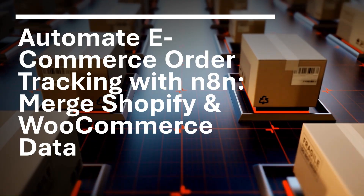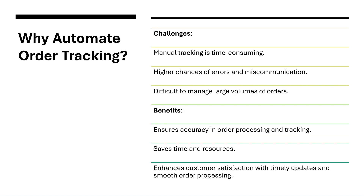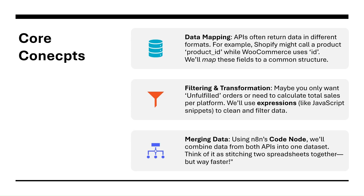E-commerce order tracking is crucial for managing customer expectations and ensuring timely delivery. Manual tracking can be inefficient and error-prone. Challenges include: manual tracking is time-consuming, higher chances of error and miscommunication, and difficulty managing large volumes of orders. The benefits of automation include ensuring accuracy in order processing, saving time and resources, and enhancing customer satisfaction with timely updates and smooth order processing.